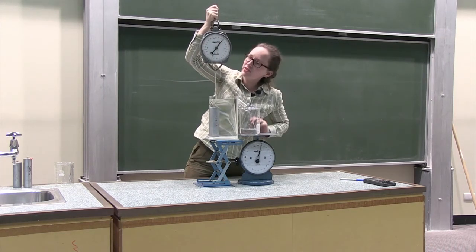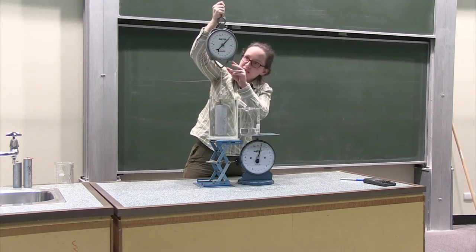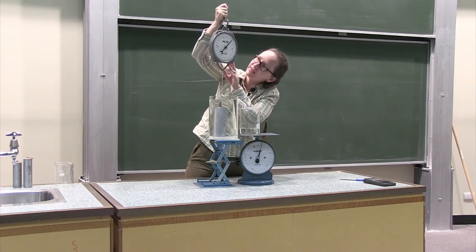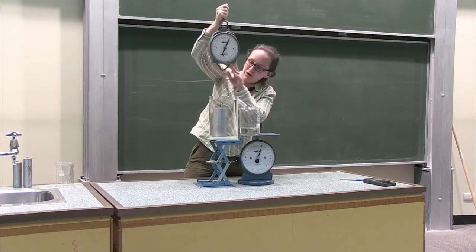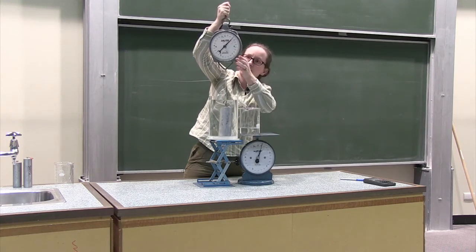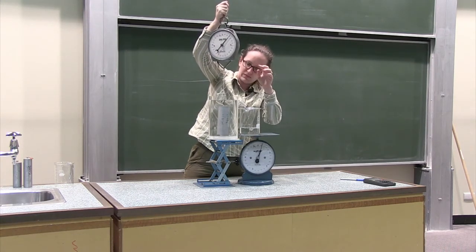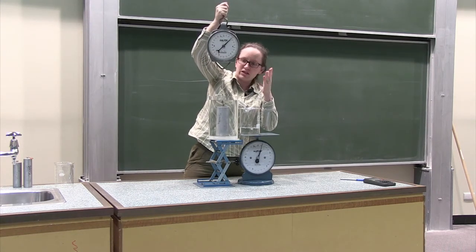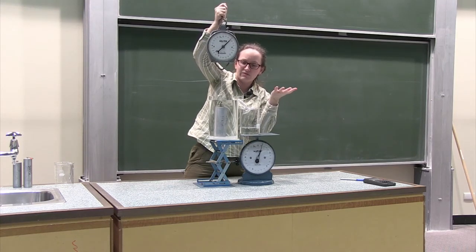Now you can see on these scales, now that it's submerged, the scales are reading approximately 600 grams — a difference of 300 grams — suggesting that 300 grams, or 300 millilitres, of water has been displaced.